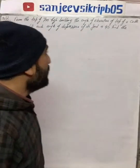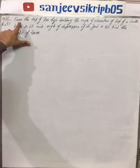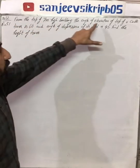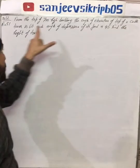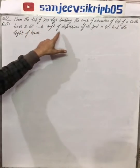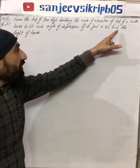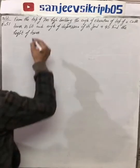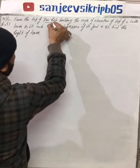Hello students, here is your math teacher Sanjeev Sikri. Today I am going to take a question from the chapter Application of Trigonometry for standard 10. So let's read the question before solving it. From the top of a seven meter high building, the angle of elevation of the top of a cable tower is 60 degrees, and the angle of depression of its foot is 45 degrees. Find the height of the tower.